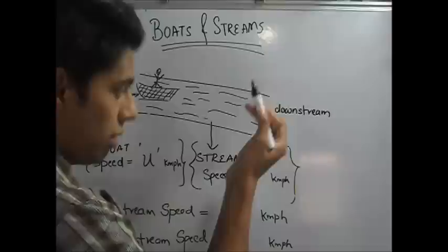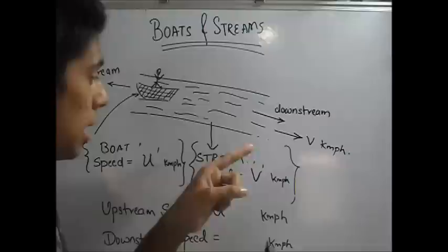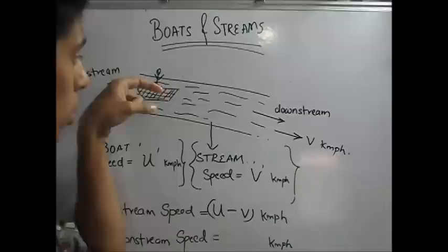Stream Speed is v kilometers, so actually, you have a speed here of v kilometers per hour. But your boat is riding this side. So what happens is the stream is opposing your force. So your speed will be u, that is your own speed, but this will oppose it. So minus v. So your upstream speed will be u minus v kilometers per hour.